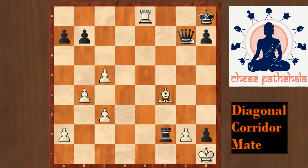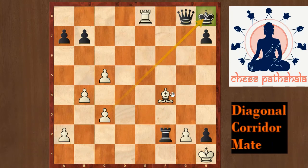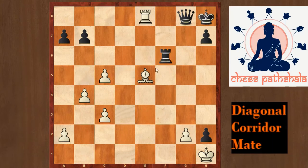After rook e8 check, if queen g8, we once again have the king trapped on h8 and we just need to check the king on the diagonal. We do that with bishop to e5 check. Now only the rook can defend this checkmate for one move, but after bishop takes f6 we once again have the diagonal corridor mate — the queen on g8 is pinned and the king is trapped in the corner.